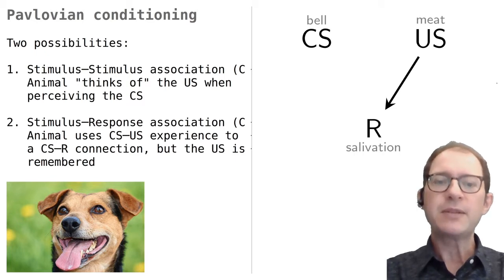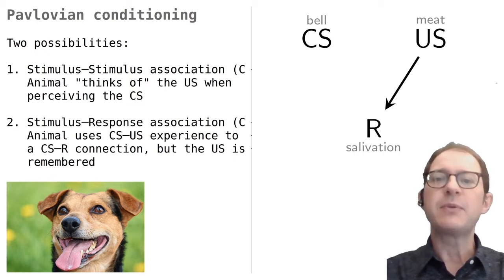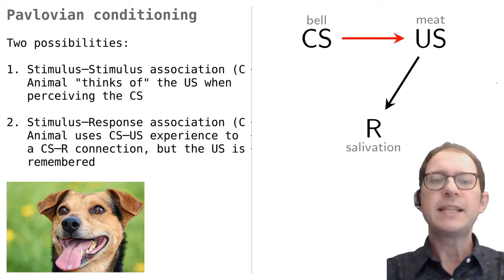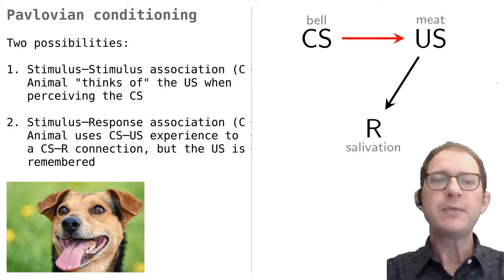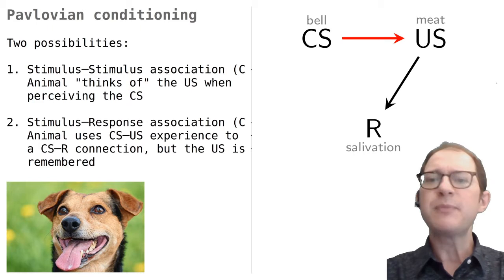The question is how the CS gets associated with the response. One possibility is that the CS gets connected with the US, as indicated by the red arrow. In this view, the response is elicited because the CS brings to mind, so to speak, the US.